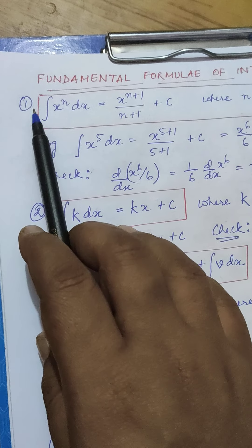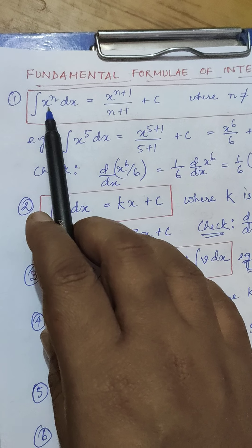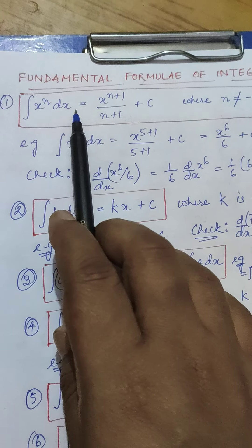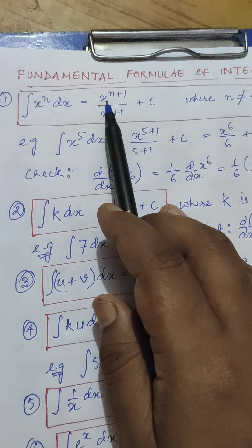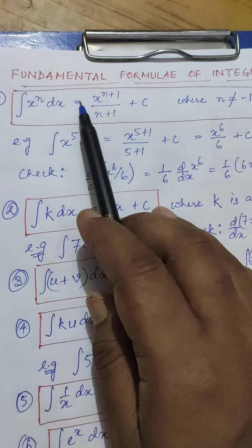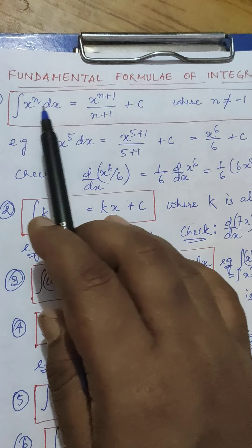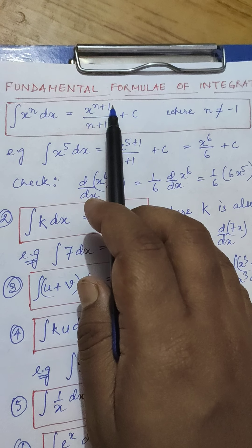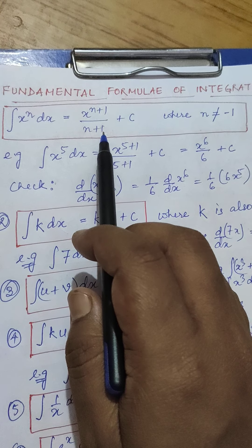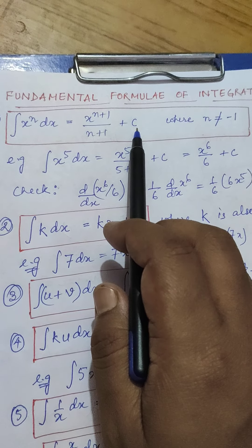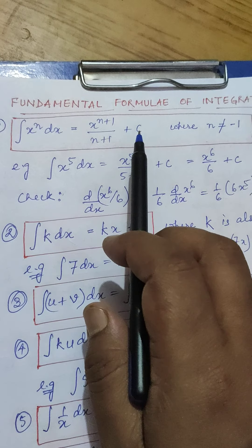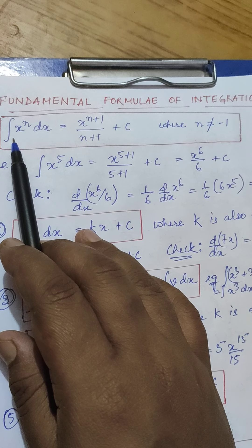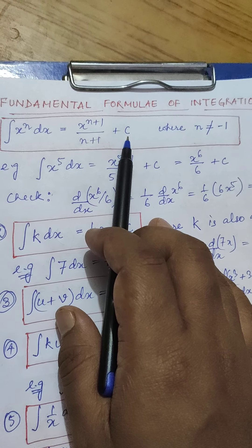The first formula we are going to consider is the integration of x raised to the power n dx. It is a very important and commonly used formula. The value of the integration of x^n dx will be x raised to the power n+1, divided by n+1, plus a constant quantity, because it is an indefinite integration. Whenever an indefinite integration is there, a constant quantity always comes out.